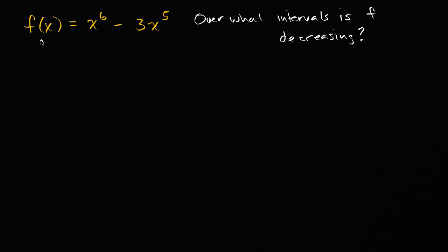The way we do that is we look at the derivative of f with respect to x and think about when is that less than zero. If the rate of change of f with respect to x is less than zero, then over those intervals it will be decreasing.